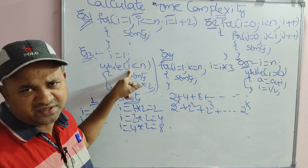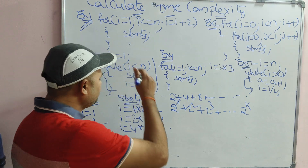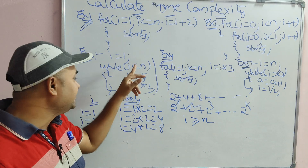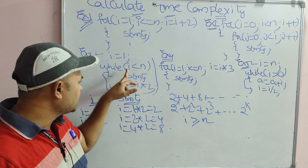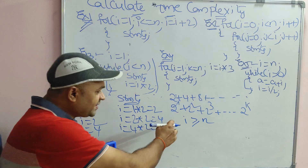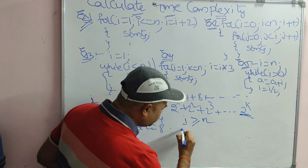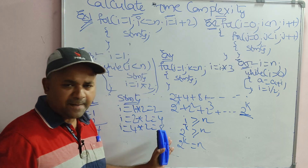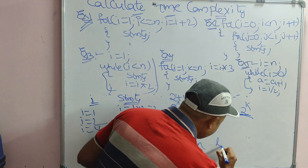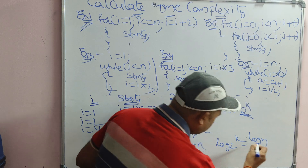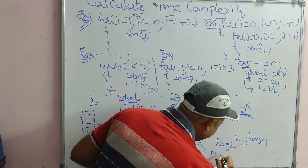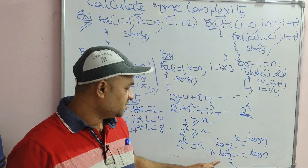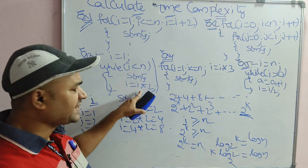The condition i less than n will be false when i is greater than or equal to n. This last term i is 2 power k, so 2 power k is greater than or equal to n. We can write 2 power k equals n. Applying log on both sides: log(2 power k) equals log n, so k log 2 equals log n. Since log base 2 of 2 is 1, k equals log n. So the time complexity is order of log n.